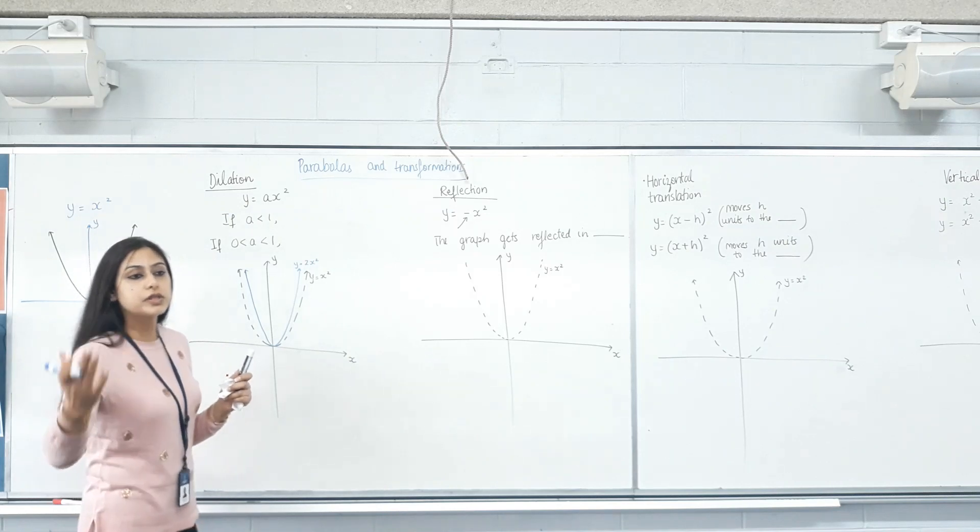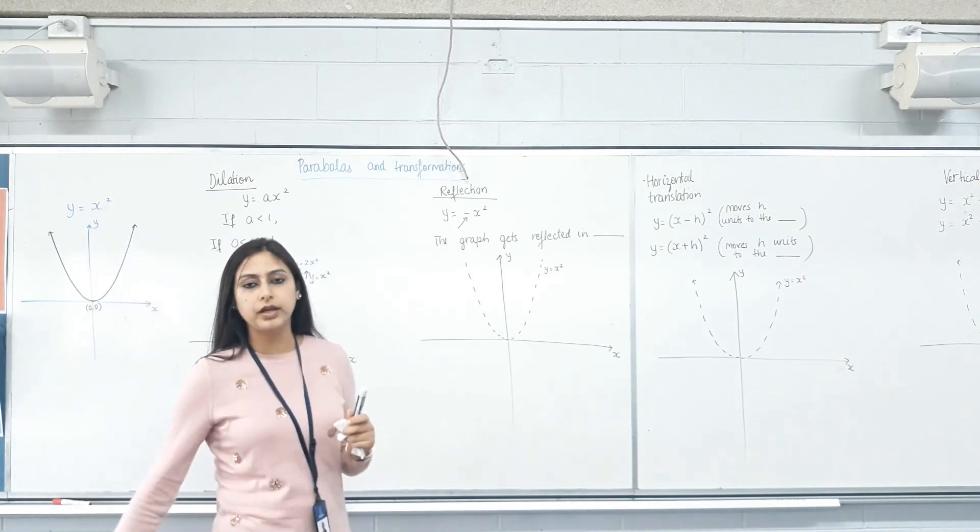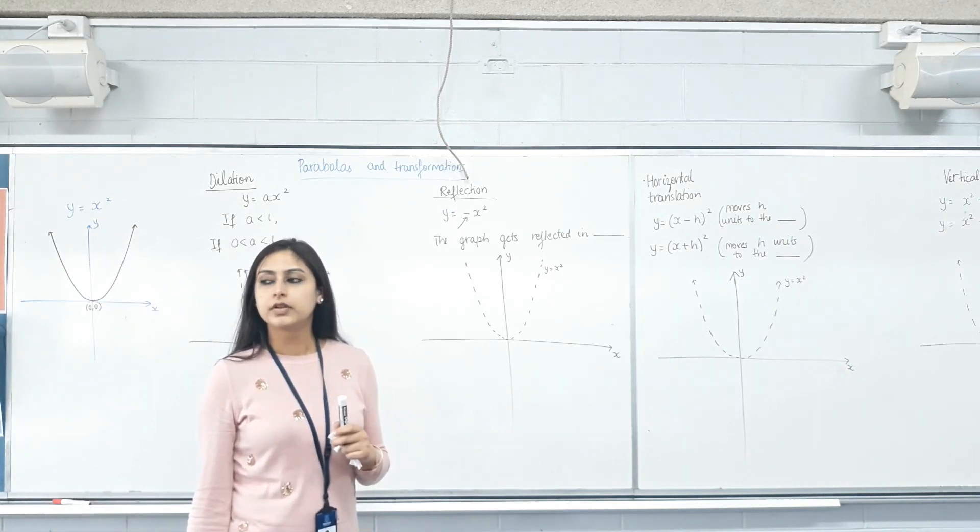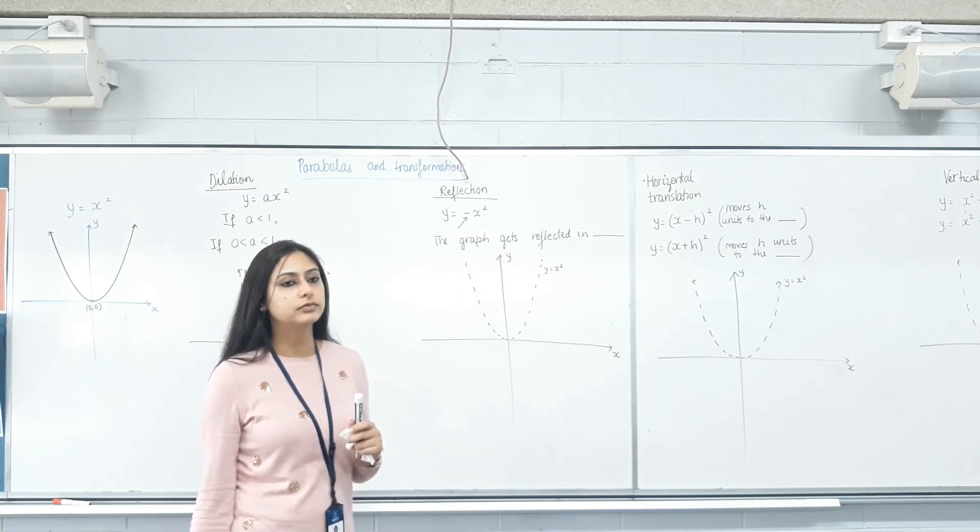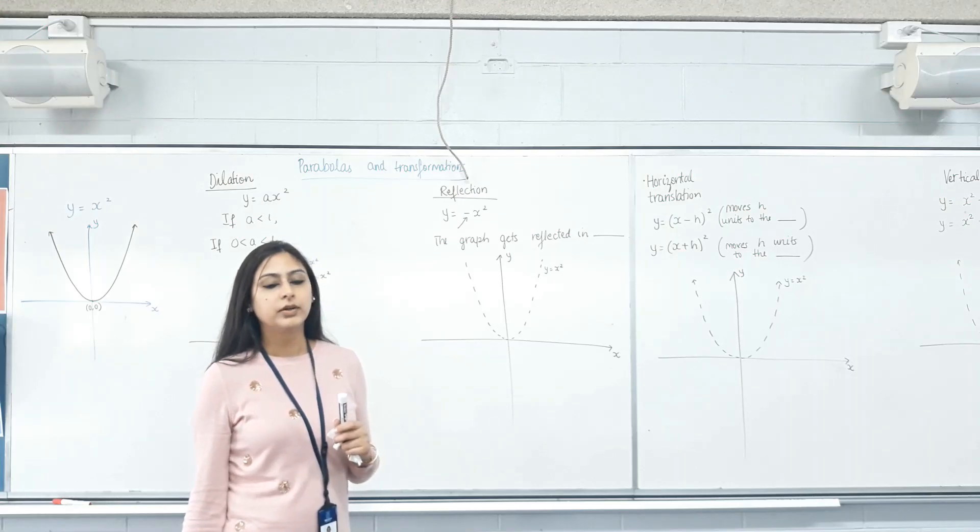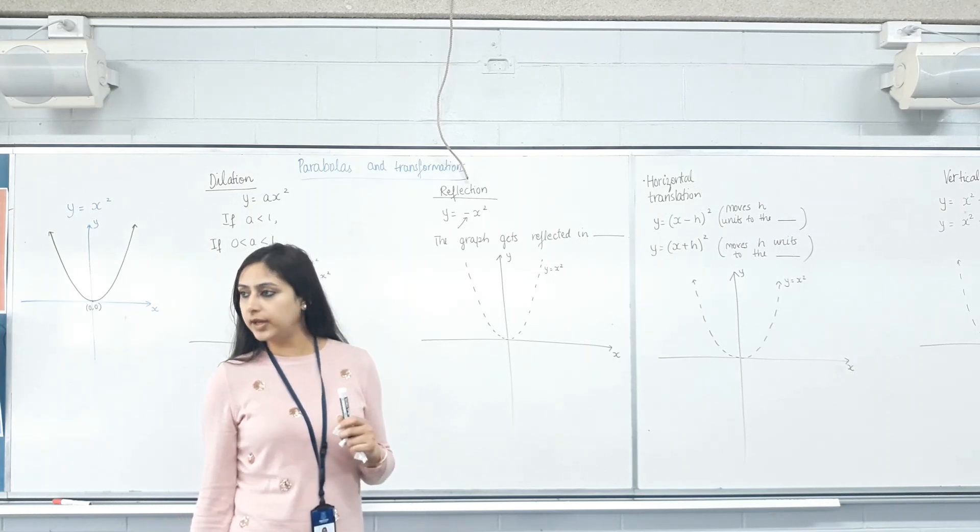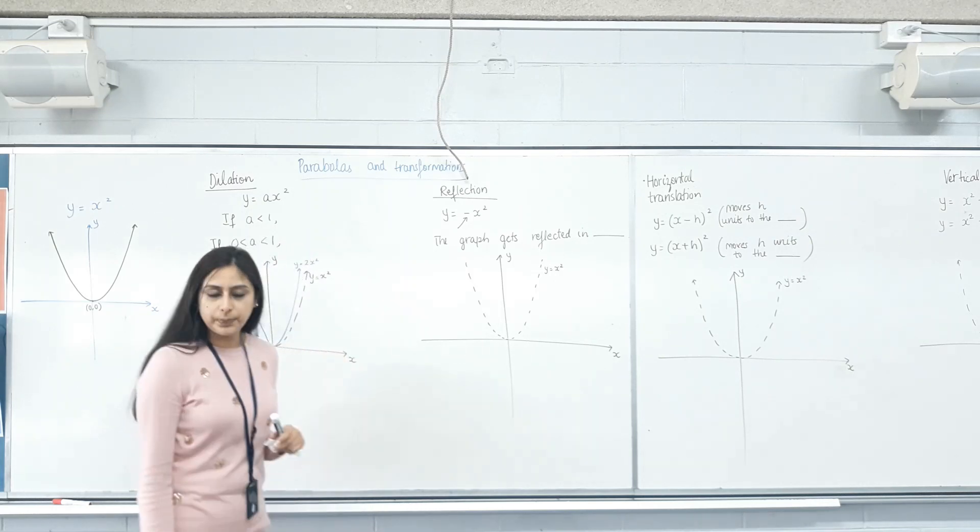You can also sketch y equals 3x squared. Do that now. So 3x squared now. See what happens. It's smaller. What's the word? Narrower, not smaller. Does it get even narrower? Yes. Perfect.